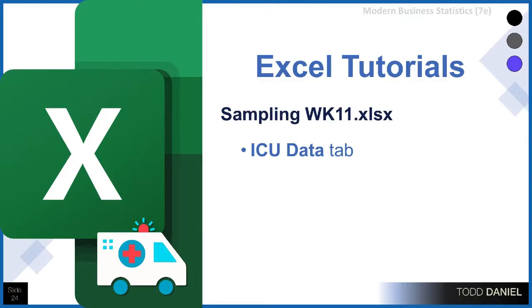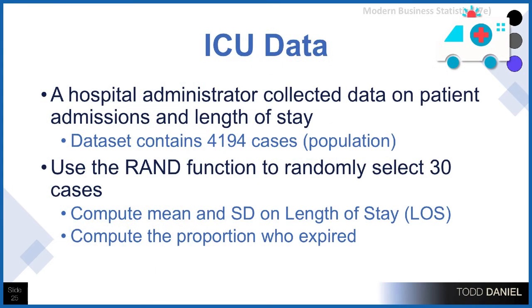To illustrate the infinite population, we're going to use sampling week 11 with the ICU data tab. The ICU data is a list of 4,194 cases which we're going to treat as our population. A hospital administrator has collected data on patient admissions and length of stay, as well as other variables like age and whether or not the individual expired or died. We're going to use the RAND function to randomly select 30 cases and compute the mean and standard deviation for the length of stay, and next week we'll learn how to compute a proportion for those who expired.